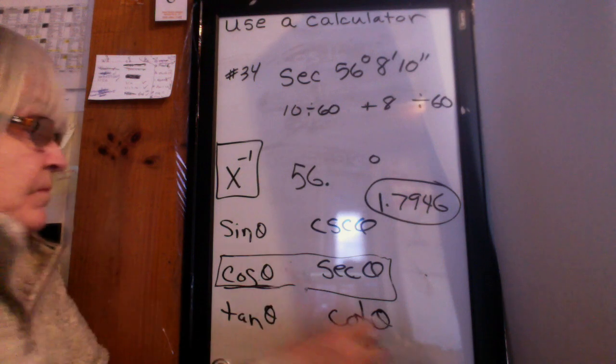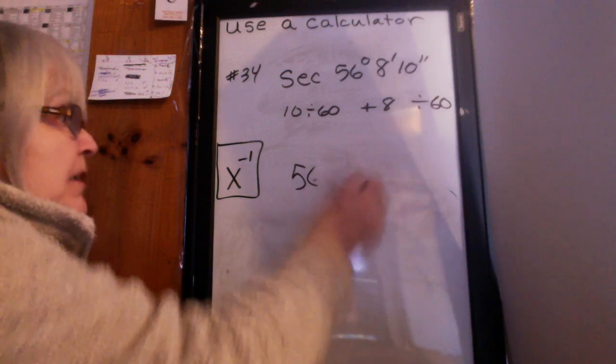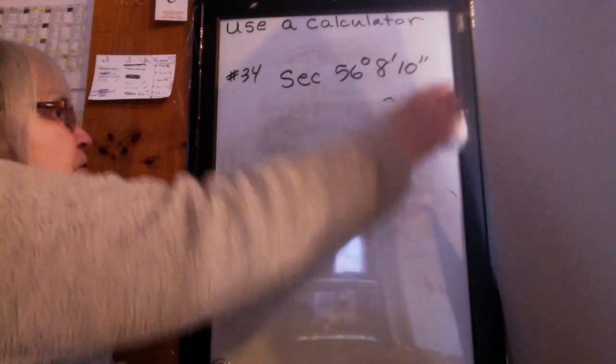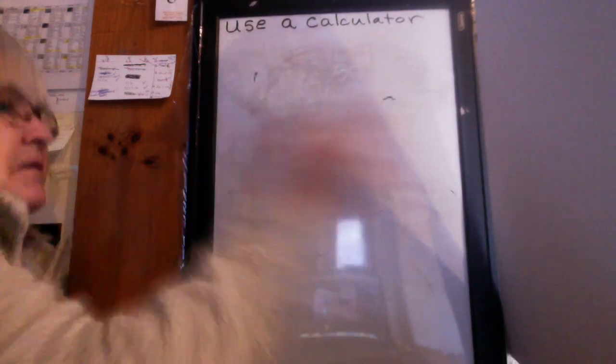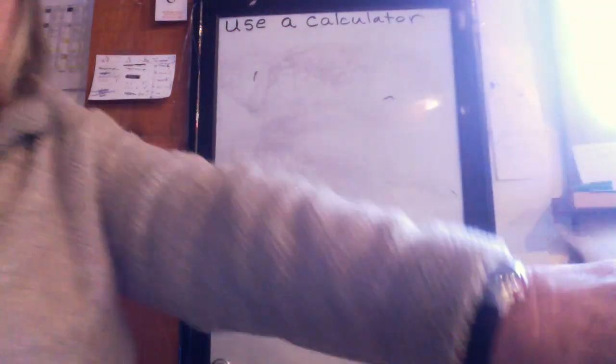Now, the next section deals with when you're given these decimal numbers, how can you find what the angle is? So that's a little bit trickier to do.